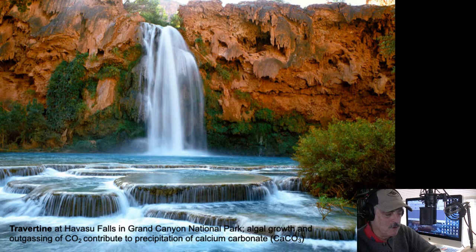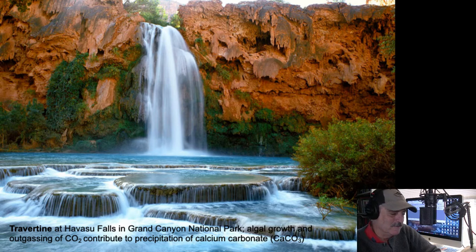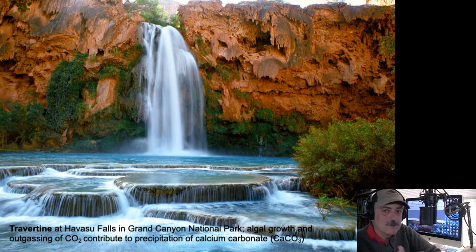Rimstone dams are sites beneficial for microorganism growth. We might see something like this on Mars — perhaps places that look like Havasu Falls related to microbial precipitation of calcium carbonate. This is one of the things people examine in space exploration: are we alone in this universe, or is there life on other planets? That travertine here is a chemical sedimentary rock, as is sinter, as is the potash we saw previously.